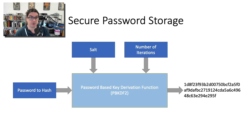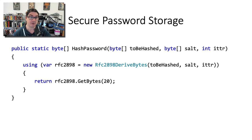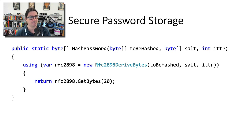In .NET we have a class called rfc2898DerivedBytes — a bit of a bizarre name. Ordinarily if you're not familiar with RFC numbers and saw that in the documentation you'd be forgiven for skipping over it. But RFC 2898 is actually the name of the spec given to this technique for password hashing, so this class does exactly what it says on the tin. We have a method called HashPassword, into which we pass a byte array of our password.